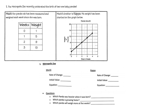Problem number one: the metropolis zoo recently celebrated the birth of two new baby pandas. Mochi the panda has been measured and weighed each week since she was born, shown in a table. Mochi's brother Kappa's weight has been charted on a graph. We need to find the rate of change, initial value, and equation for both Mochi and Kappa, then compare all the information.